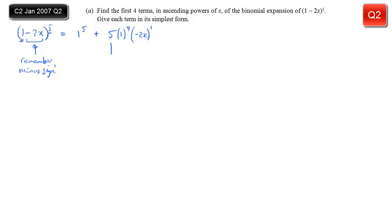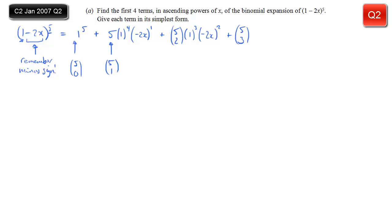The 5 comes from doing 5 choose 1, and the invisible coefficient of 1 is from 5 choose 0. You should know the first coefficient is always 1 and the second is always n. The third term is 5 choose 2, the power of 1 decreases from 4 to 3, and the power of minus 2x increases from 1 to 2. Then 5 choose 3 for the fourth term, the power of 1 decreases to 2 and the power of minus 2x increases to 3. That gives us the first four terms we want.